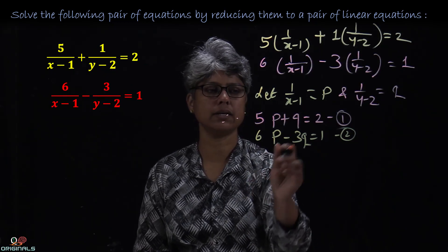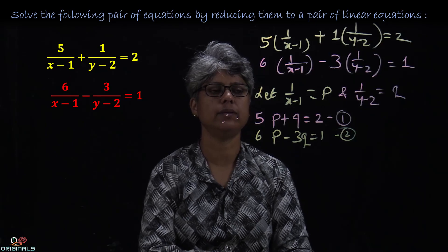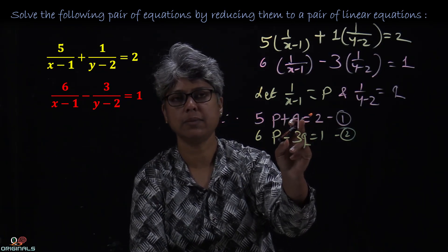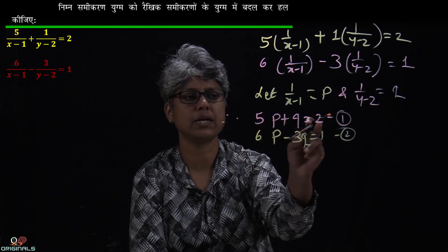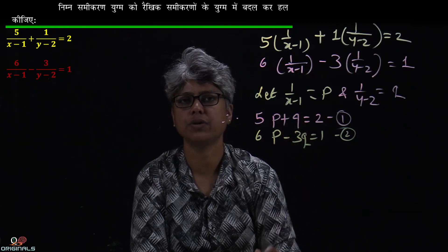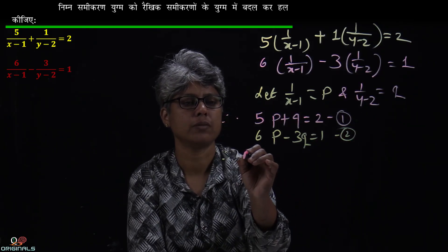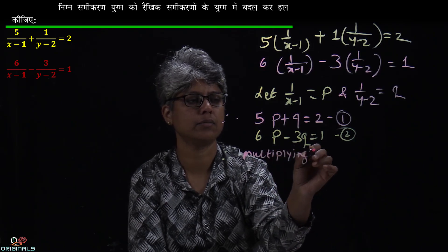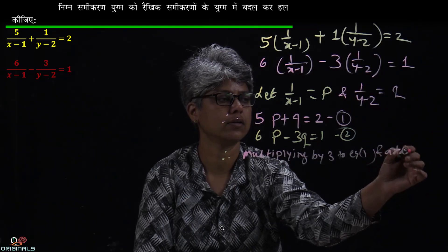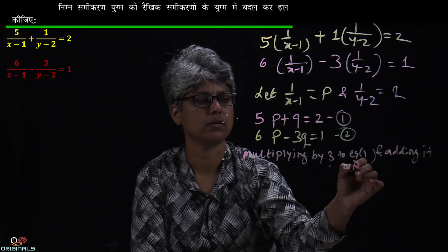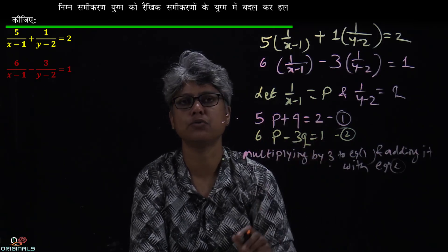We will solve this by the elimination method. In the elimination method, we need to make coefficients equal. So we will multiply equation 1 by 3 and then add it with equation 2. That means we multiply this equation by 3 and then add it with equation 2.